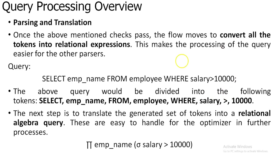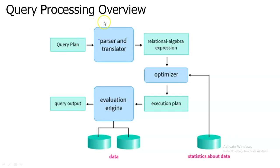After parsing, the translation part converts the SQL query into a relational algebra expression. This is where the high-level language is converted to a lower-level language that the database understands. The database operates on relational algebra expressions, so the SQL query is translated accordingly. This completes the first part of query processing.